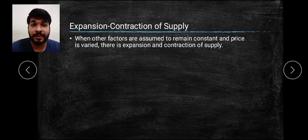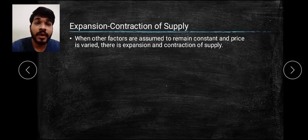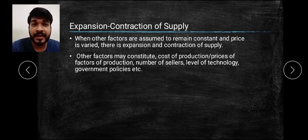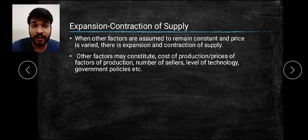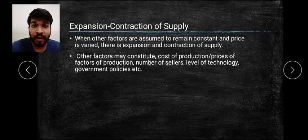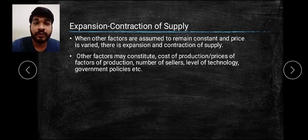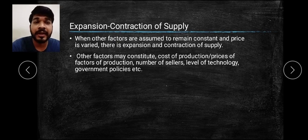At that time we experience expansion and contraction of supply. When there is an increase in price, the supply will increase because it has a positive relationship. We have already studied the law of supply. So on the basis of the law of supply, when price increases supply increases, and when price decreases supply decreases. This is how expansion and contraction happens.